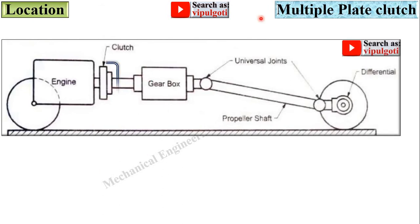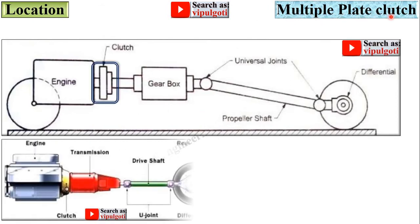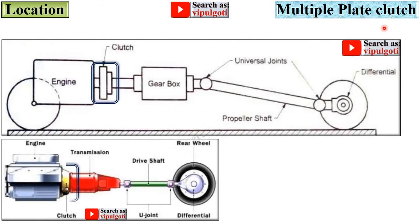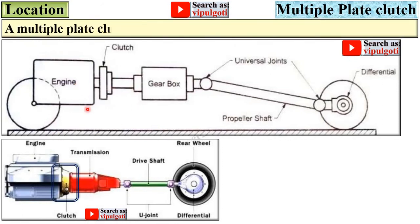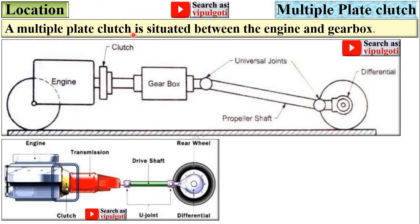A multiple plate clutch is situated between the engine and the gearbox. As you can see in this figure, this is the engine, this one is the gearbox, and in between there is the clutch.